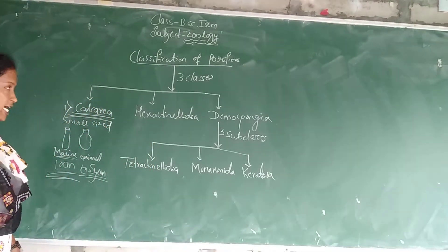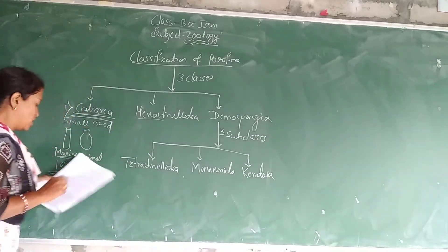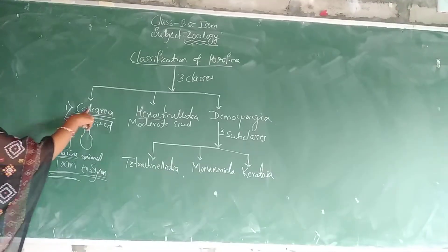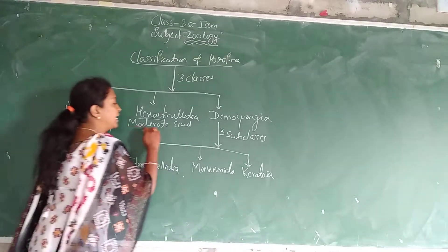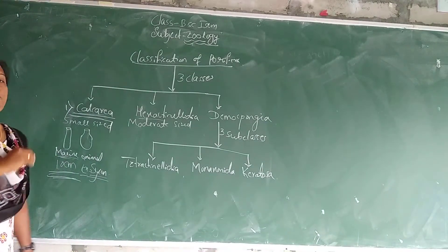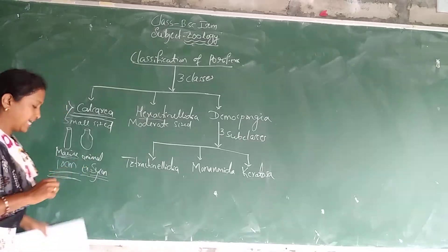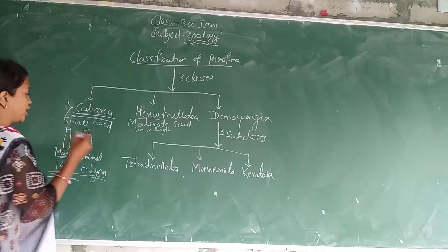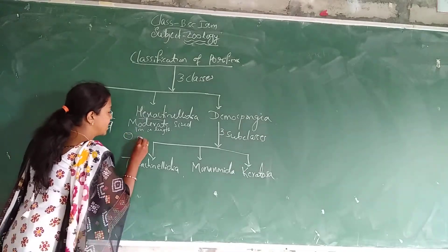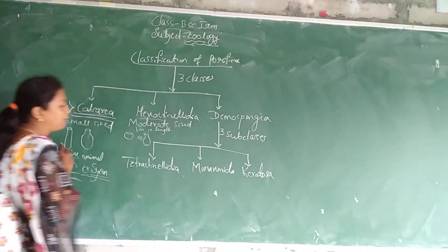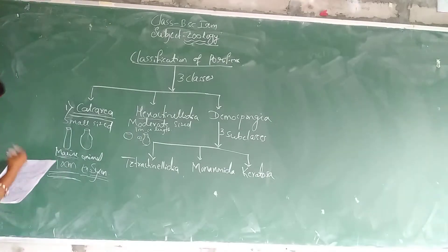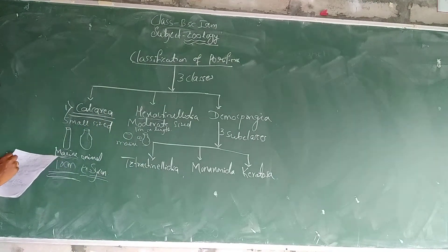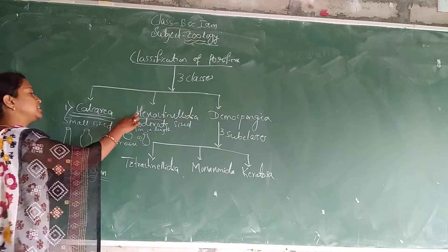The next class is Hexactinellida, another class in Porifera. These are moderate size — meaning a little bit bigger than Calcarea. These are 1 meter in length. Body shape is cup-like or vase-like. These are marine animals found in many deep sea waters.